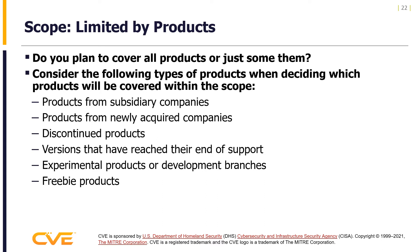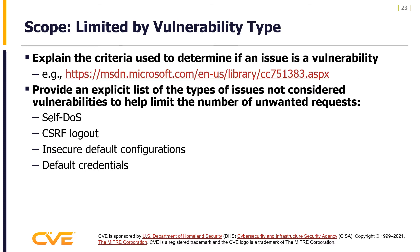Do you plan to cover all products or just some of them? Consider the following product types when deciding scope: products from subsidiary companies, newly acquired companies, discontinued products, versions that have reached end of life, experimental products, development branches, and freebie products. First, determine if an issue is a vulnerability — there are many interpretations, so provide an explicit list of issue types not considered vulnerabilities to help limit unwanted requests, such as self-DOS, CSRF, logout, insecure default configurations, and default credentials.